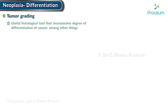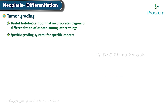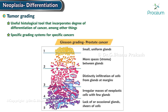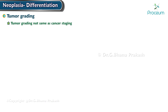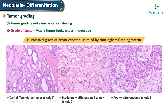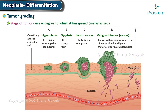Tumor grading is a useful histological tool that incorporates the degree of differentiation of a cancer among other things. There are specific grading systems for specific cancers, such as the Gleason grading system for prostate cancer. Note that tumor grading is not the same as cancer staging. The grade refers to how a tumor looks under the microscope, while the stage refers to its size and the degree to which it has spread or metastasized.